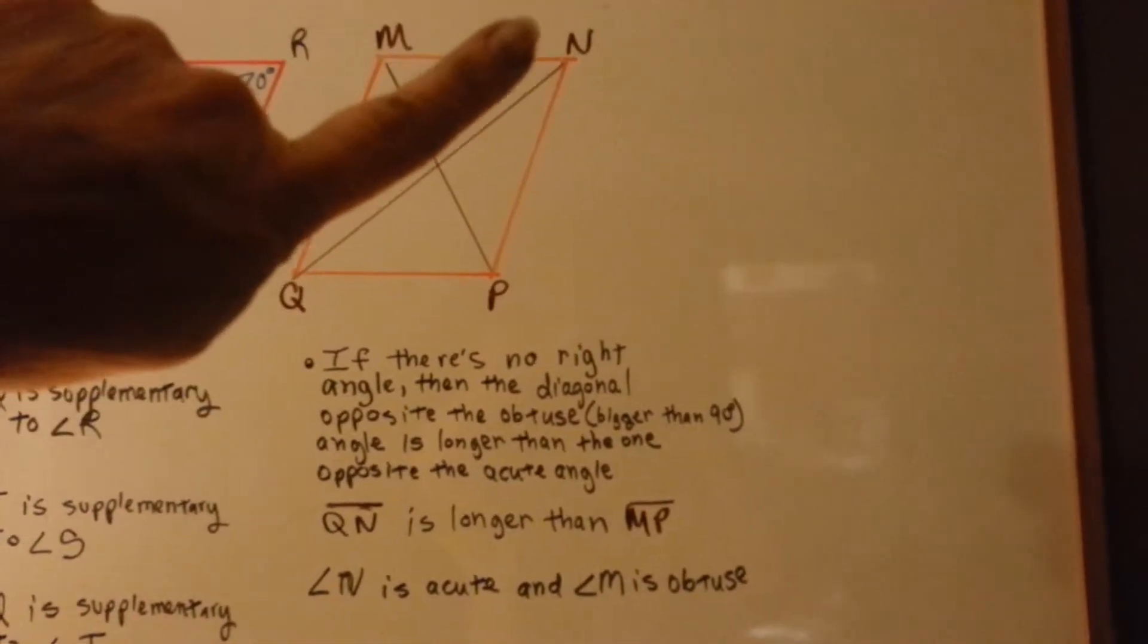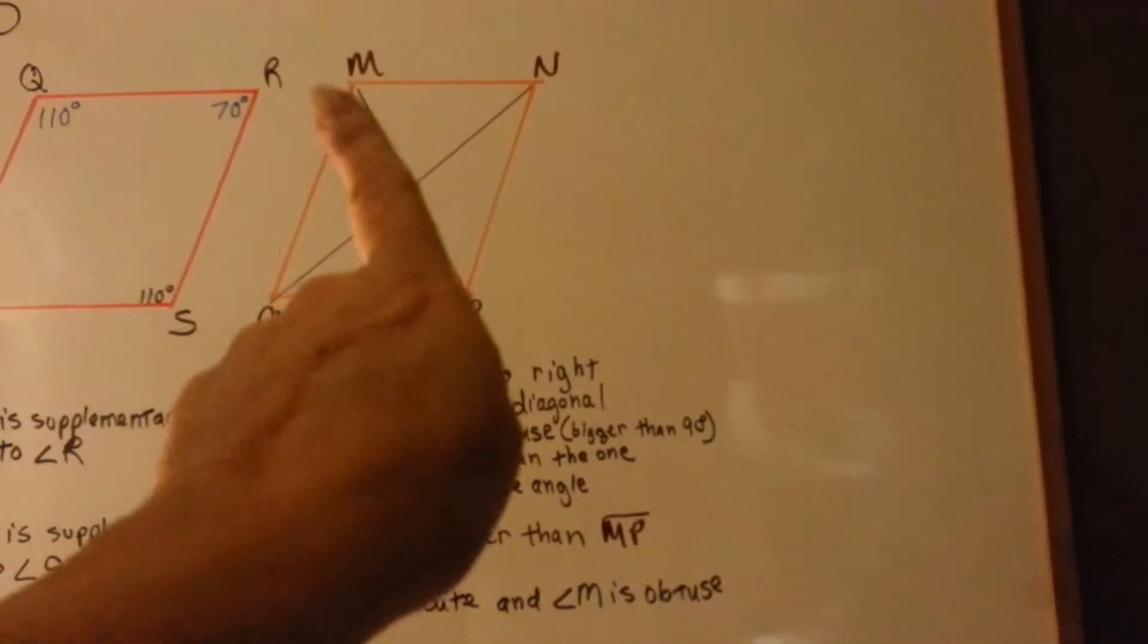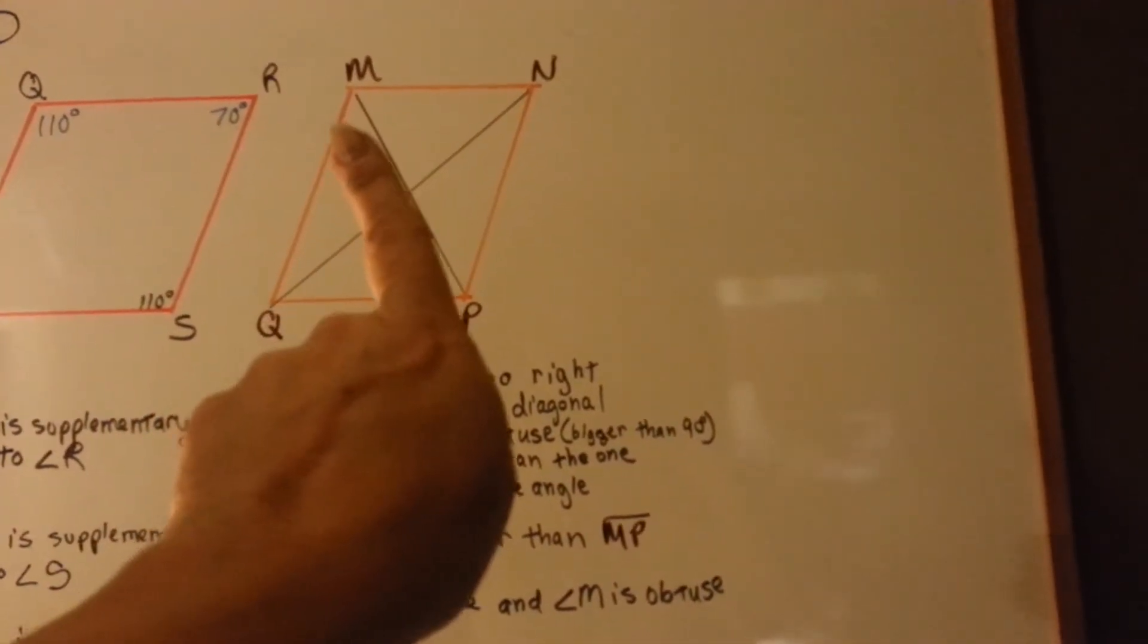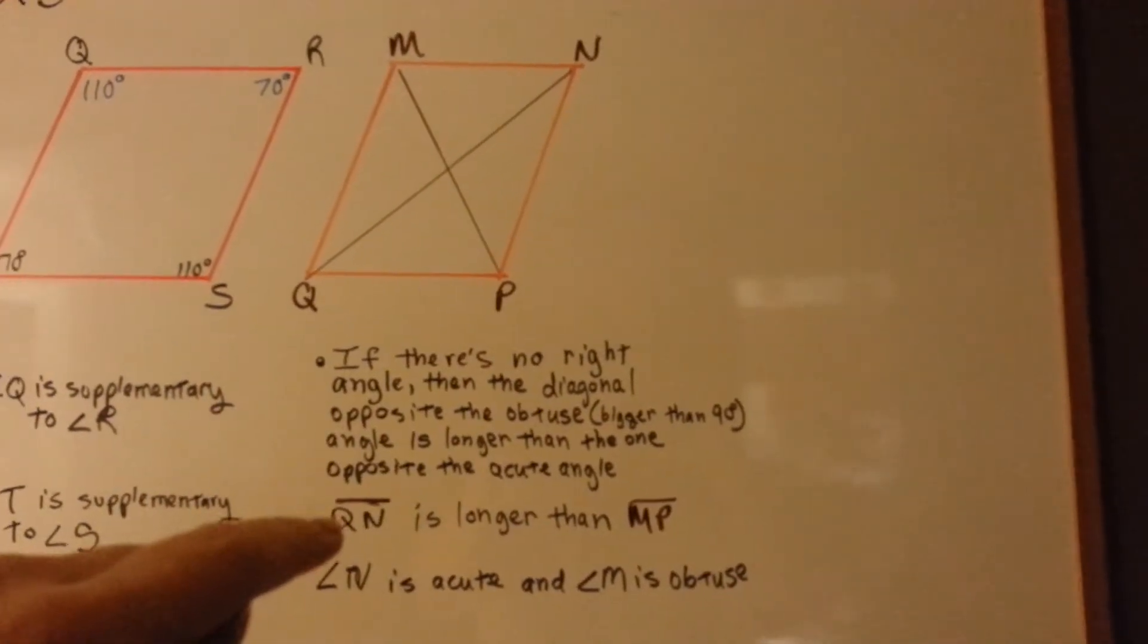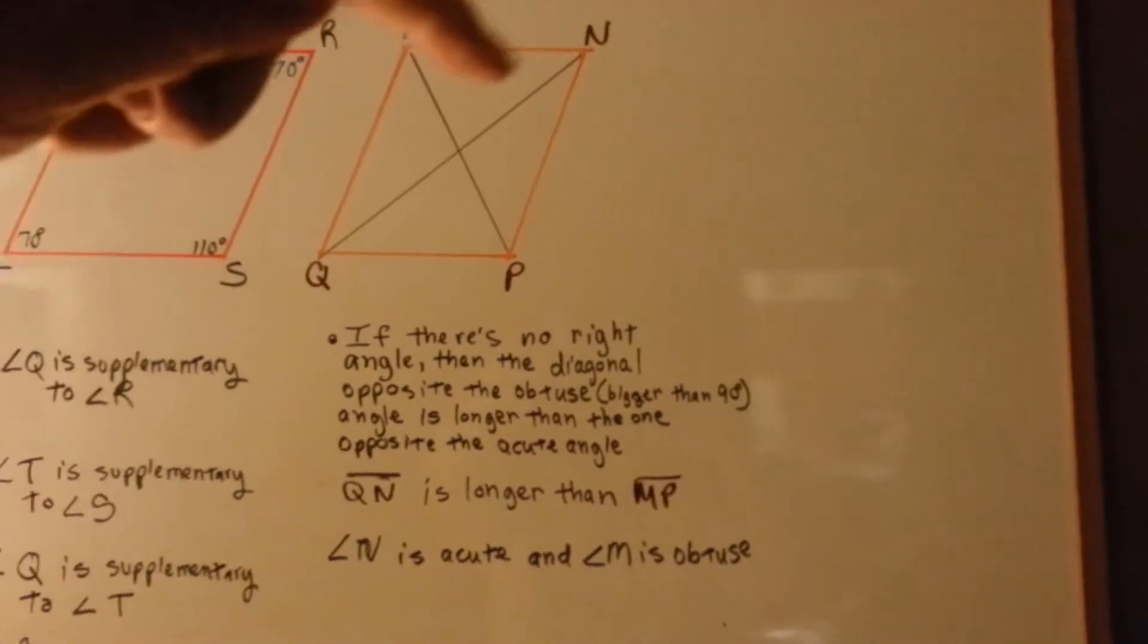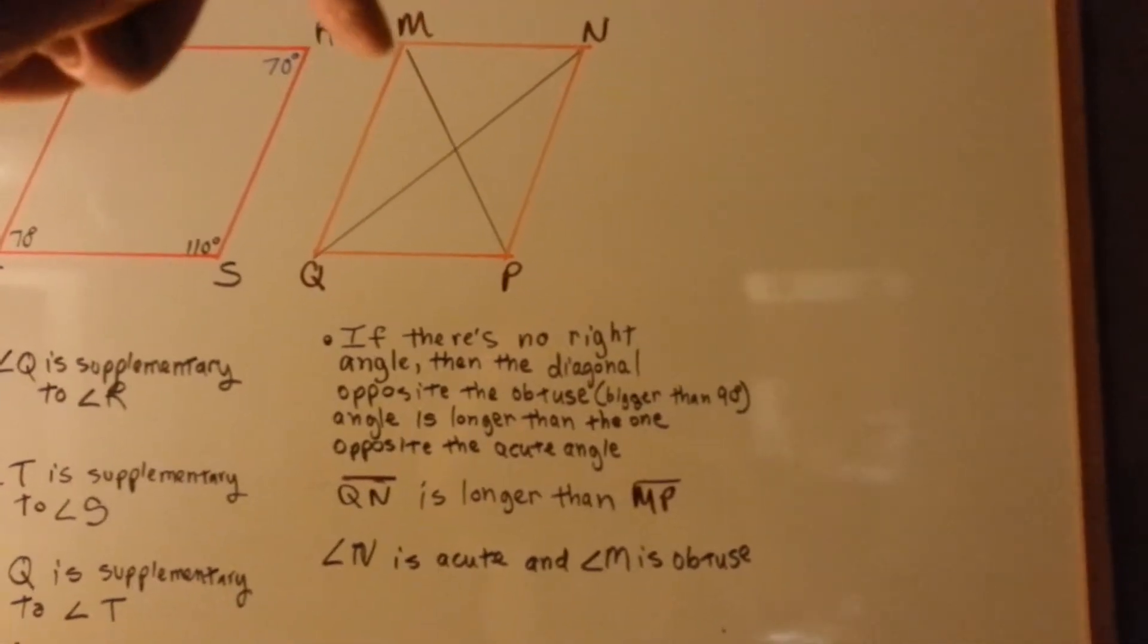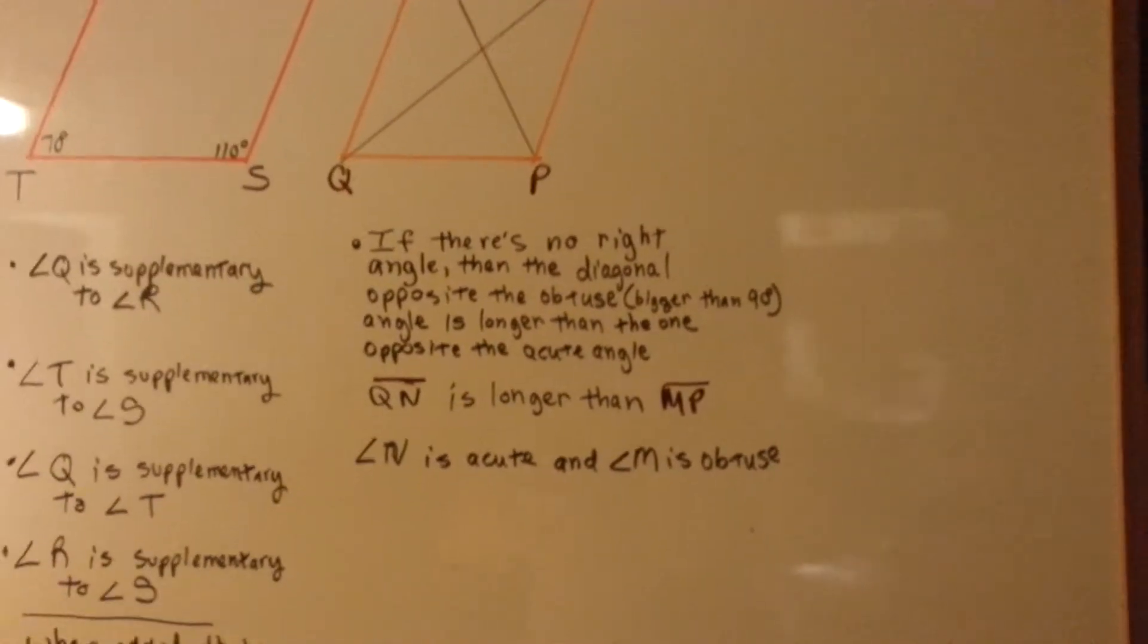Look at how long this is to my finger, okay? See where the q hits? Because if I go here, this way is definitely shorter. qn is longer than mp. Angle n is acute and angle m is obtuse. Angle q is acute and angle p is obtuse. See that?